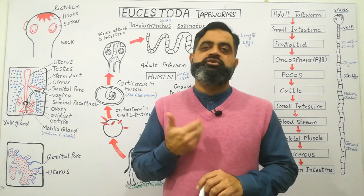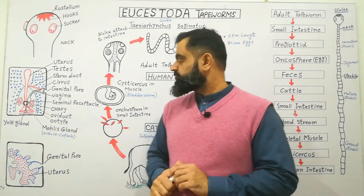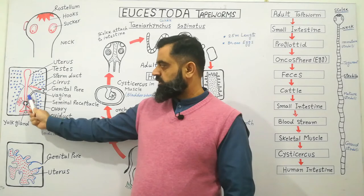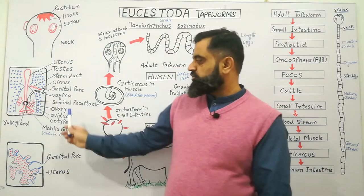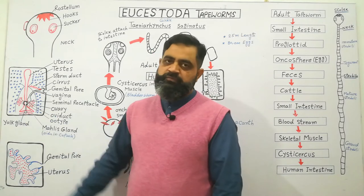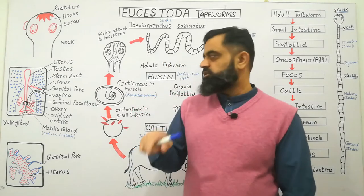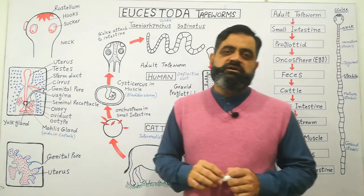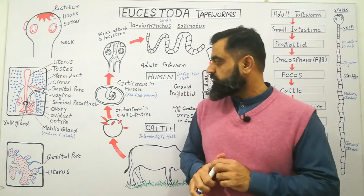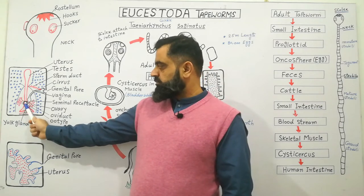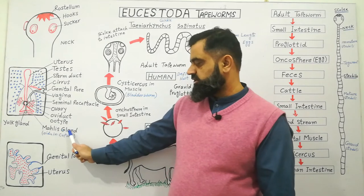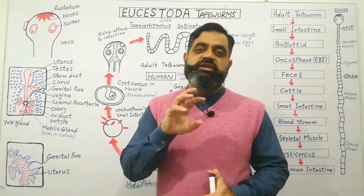The female reproductive organs of the tapeworm consist of ovaries — there are two ovaries on the lateral sides of the proglottid. As eggs are produced in the ovary, they are transported into a duct known as the oviduct. The oviduct transports eggs into a region known as the otype, a special region where eggs are deposited, fertilized, and a capsule is formed around the egg. A yolk gland nearby produces yolk which is stored in the fertilized egg, and Mehlis' gland aids in the formation of the capsule around the egg after fertilization.